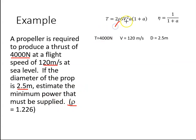So we have rho, we have V, we have T. From the diameter of the prop, we can get S.